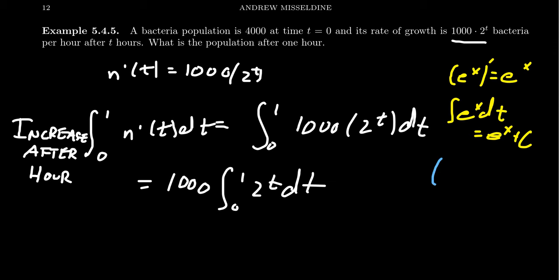If we took the derivative of 2 to the t with respect to t, we'd actually get the natural log of 2 times 2 to the t. There's this tariff that you have to pay for using the wrong base. So if we reverse this process, the integral of 2 to the t dt equals 2 to the t divided by the natural log of 2 plus a constant.